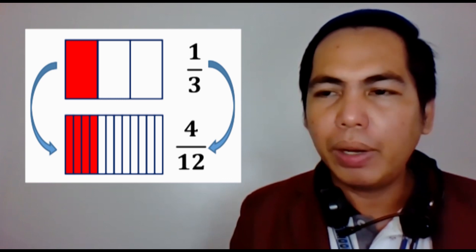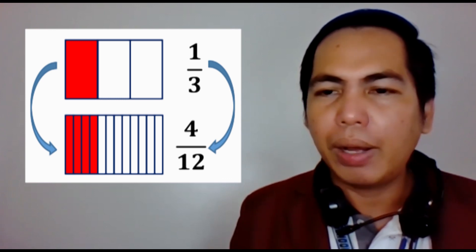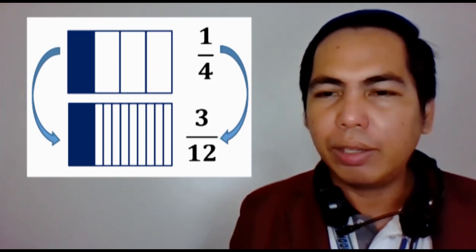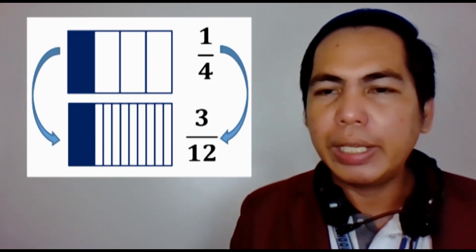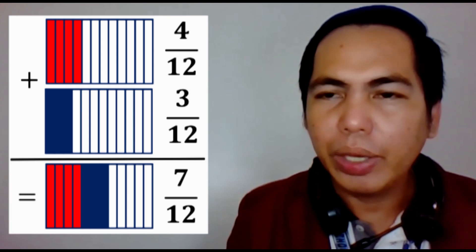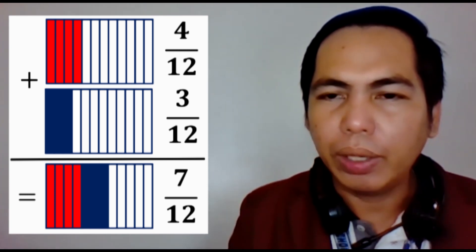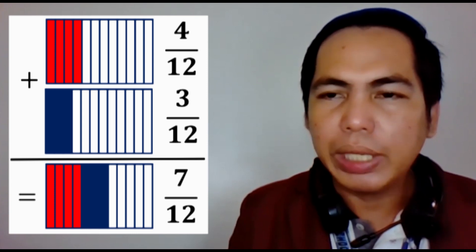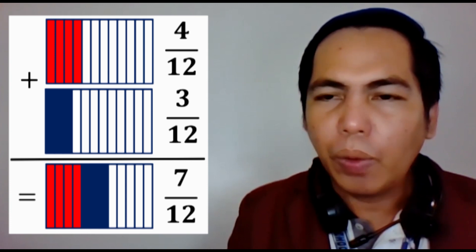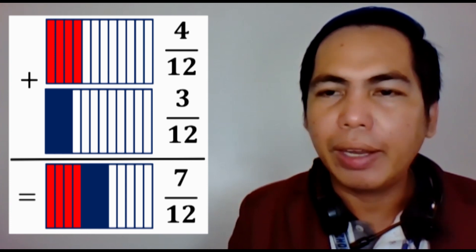Since the LCM of three and four is twelve, we divide each illustration into twelve equal parts. When we divide the illustration showing one-third into twelve equal parts, one-third is renamed as four-twelfths. And when we divide the illustration showing one-fourth into twelve equal parts, one-fourth is renamed as three-twelfths. So four-twelfths plus three-twelfths gives us seven-twelfths.